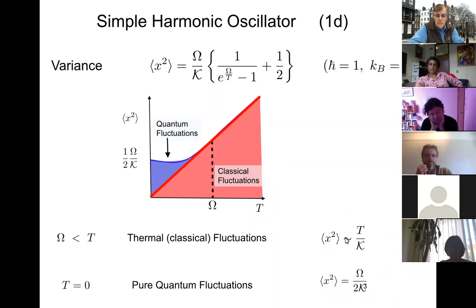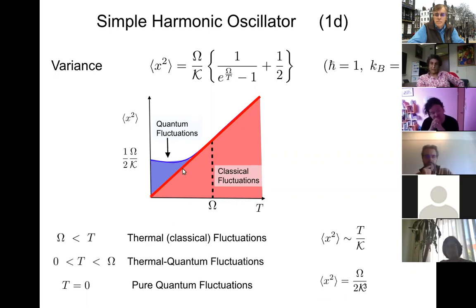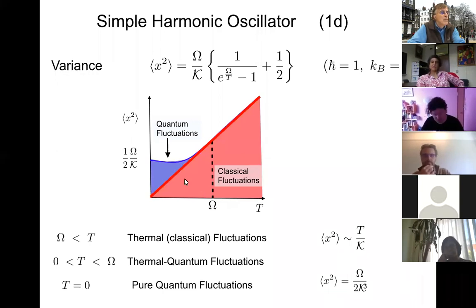We know very well that if we want to calculate thermodynamic functions at a classical phase transition, we don't usually have to worry about dynamics. However, at a quantum phase transition, we do. What's important is whether omega is greater than or less than T. In between — in the region between zero and the oscillator frequency omega — we have both thermal and quantum fluctuations. That's going to be very important because that's where our experimentalists are, and where we'll make contact with observable properties.